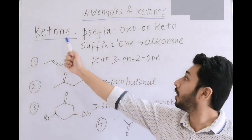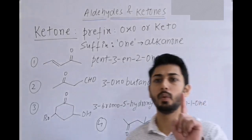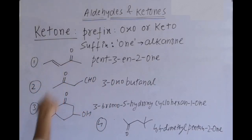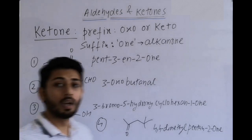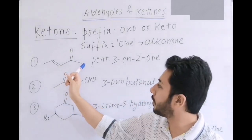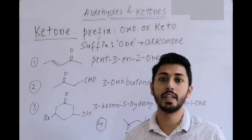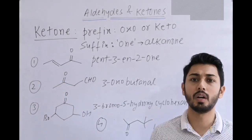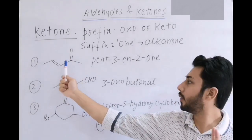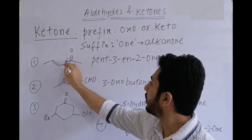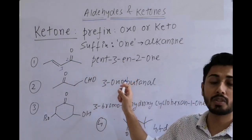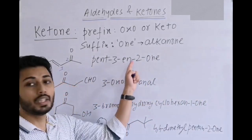For ketones, the prefix is 'oxo' or 'keto', and the suffix is 'one' — giving 'alkanone'. In the first example there is a C=O and a C=C double bond; numbering gives minimum locant to the functional group. Starting from the right side gives C=O the number 2 and the double bond number 3. The name is 'pent-3-en-2-one' — the 'e' of 'ene' is dropped before 'one'.